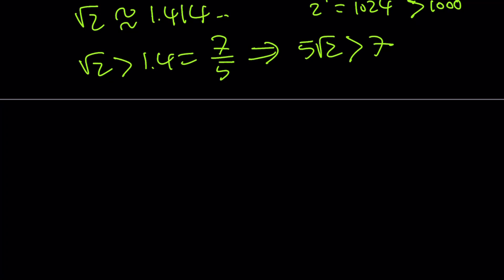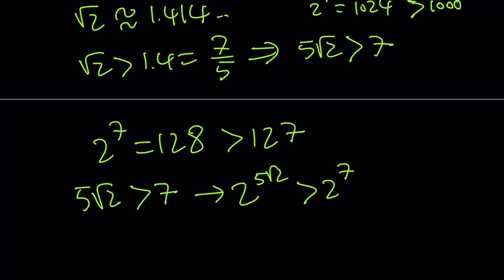5 root 2 is greater than 7. Hopefully, you get the idea. Now, we're going to start with 2 to the 7th power, which is 128. And that just happens to be greater than 127. Let's go ahead and put it together now. 5 root 2 is greater than 7. This implies 2 to the power of 5 root 2 is greater than 2 to the power of 7, which is 128, which is greater than 127. So this was kind of like a prep for the chain of inequalities.